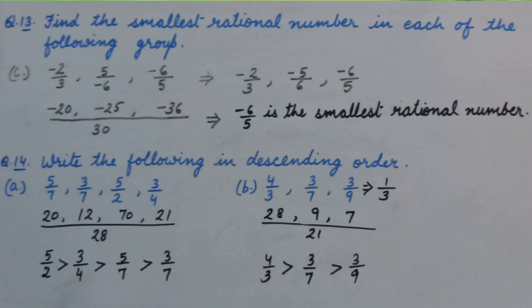And then we will find the numerators for equivalent rational numbers. Those are 20, 12, 70, and 21. Here we need to arrange in descending order, so the greatest we will take first. That is 5 upon 2, which is greater than 3 upon 4, which is greater than 5 upon 7, which is greater than 3 upon 7.